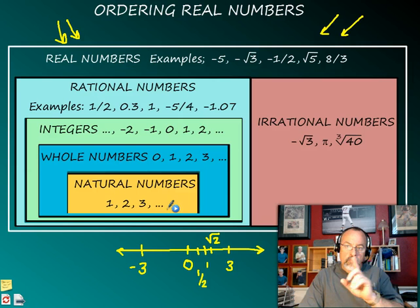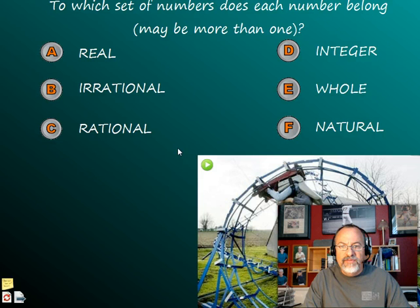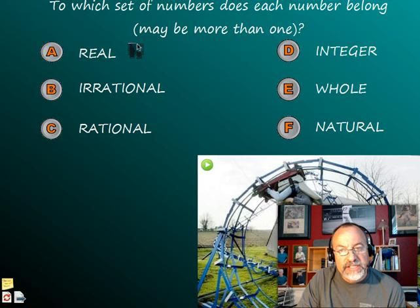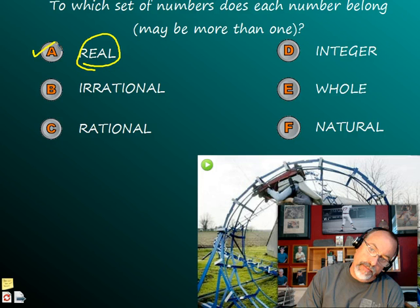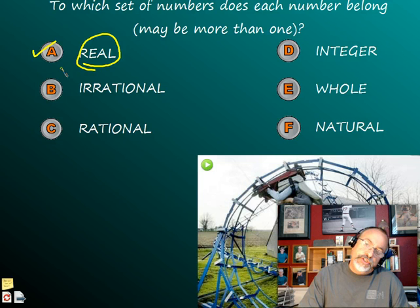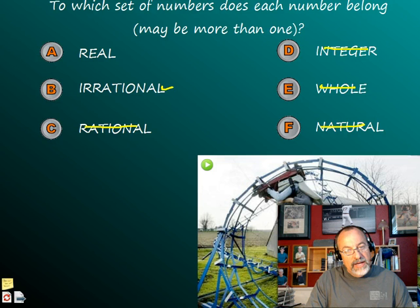So that takes care of all of our numbers. Let's do a couple of examples of something you might have to do in your homework. Here I have listed all of the possible sets of numbers, and I'm going to give you a number and ask to which set of numbers — plural — does each number belong? A couple of reminders: every number is going to be a real number, so that's going to be part of every single answer you give. And remember, if it's rational, it cannot be irrational as well, and vice versa.